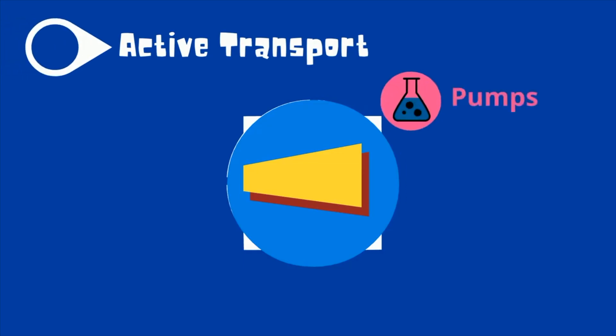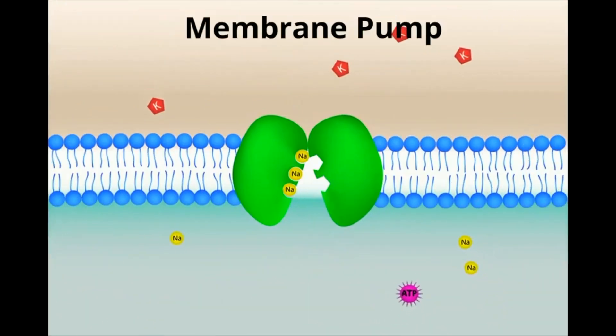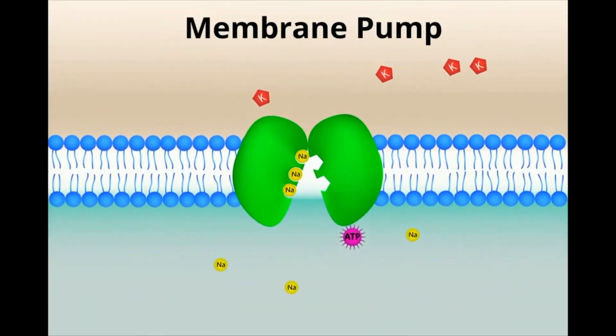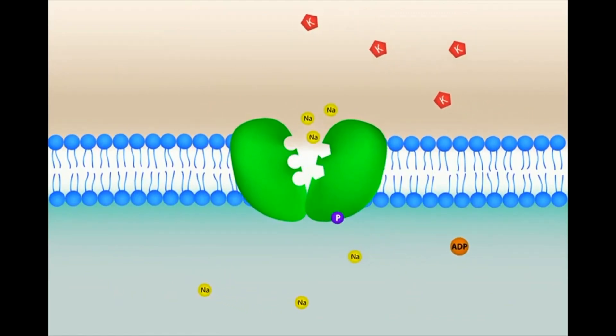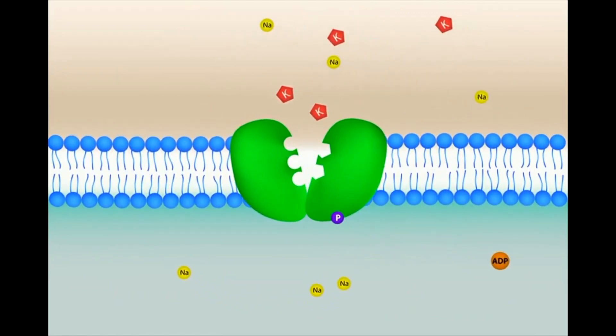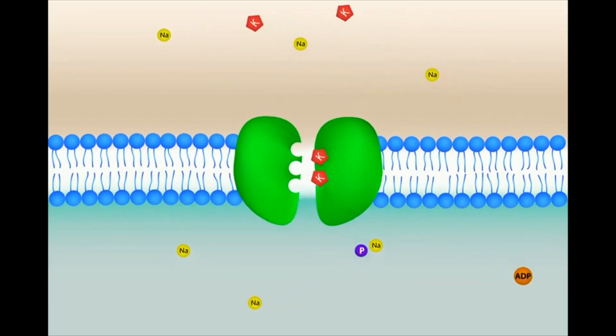Membrane pumps, endocytosis, and exocytosis. A membrane pump moves substances against the concentration gradient, or from a low concentration to a high concentration. A good example is the sodium-potassium pump.